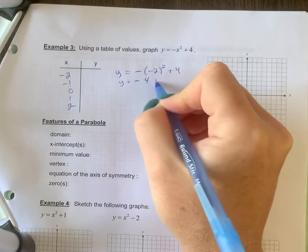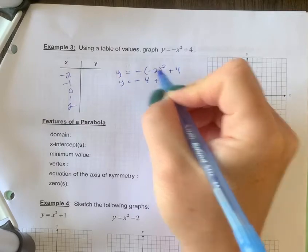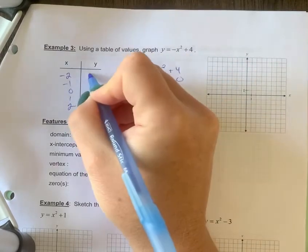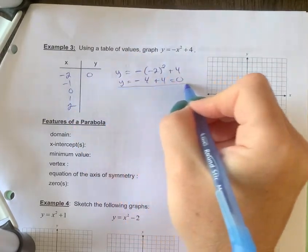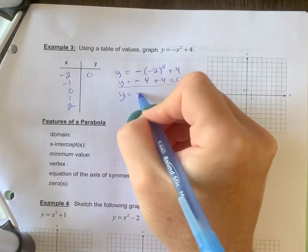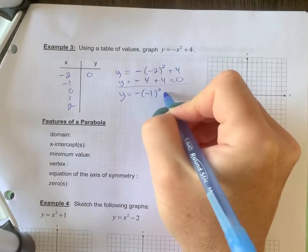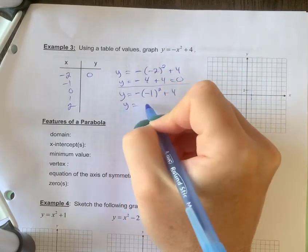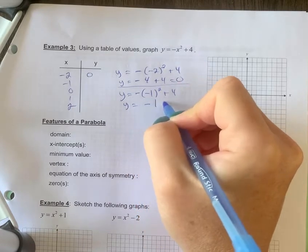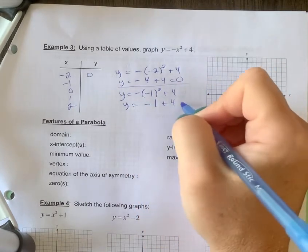So negative 2 squared is 4, so you have negative 4 plus 4, which is 0. That's your first number. I'll maybe show my work one more time with those negatives. So I'm plugging in negative 1 now. I'm going to have negative, negative 1 squared is positive 1 plus 4, I'm going to get 3.